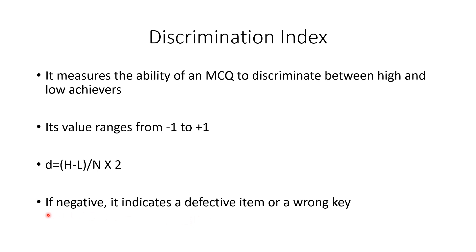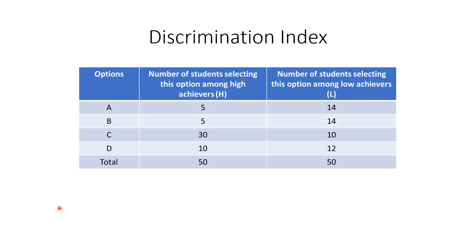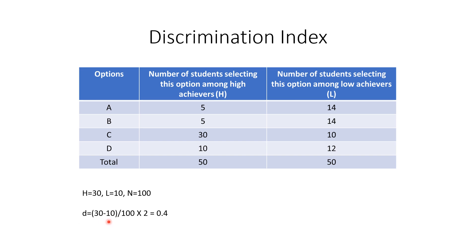We should never get a negative discrimination index. Coming back to the same example: H is 30, L is 10, and N is 100. Putting it into the formula: D = (30 − 10) / (100 / 2) = 20 / 50 = 0.4.